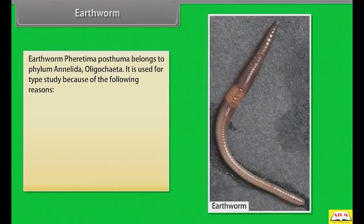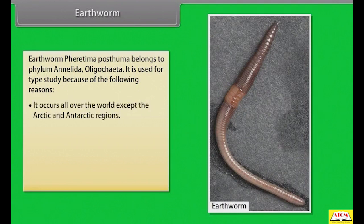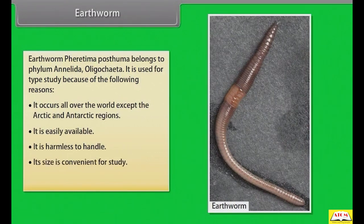Earthworm — Pheretima posthuma — belongs to phylum Annelida, Oligochaeta. It is used for type study because it occurs all over the world except the Arctic and Antarctic regions, it is easily available, harmless to handle, its size is convenient for study, and its morphology is well studied.